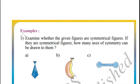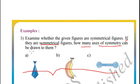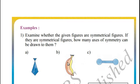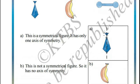Now let us see some examples of symmetrical figures. Example 1: examine whether these given figures are symmetrical figures or not. If they are symmetrical figures, then how many axes of symmetry could be drawn on them? You can draw an axis of symmetry on this figure at this region. This is a symmetrical figure which has one axis of symmetry.